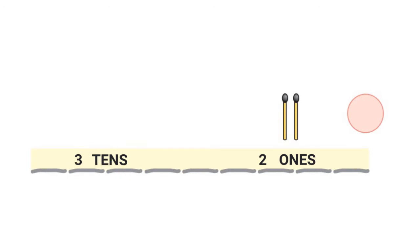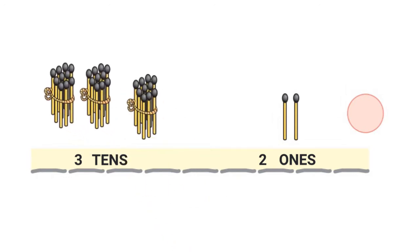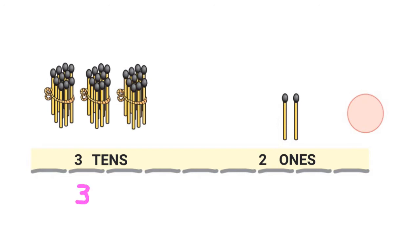In this question I have 3 tens. Let me draw 3 tens: 1, 2, 3. Now I know that 3 tens is 30. And I have 1, 2 — that's 2 ones — which means I have 30 and 2 — 32 matchsticks in all.